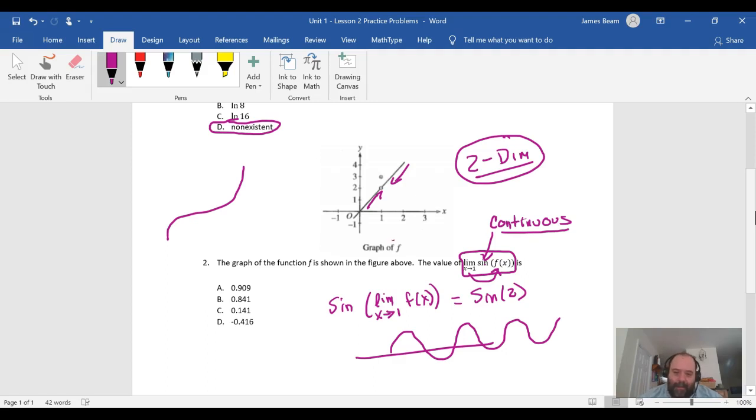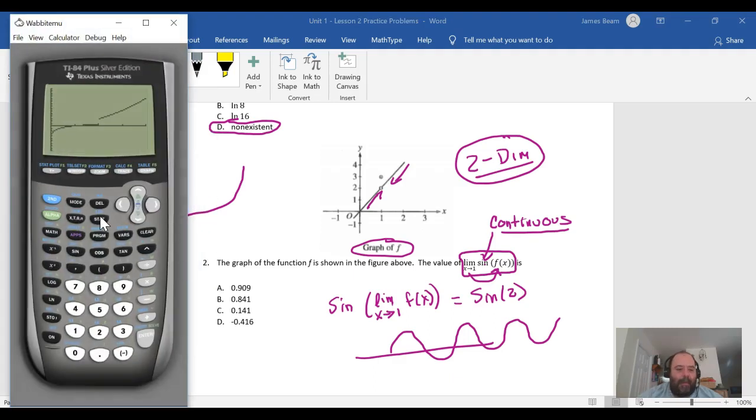So this one would have to be a calculator active problem. I would go in and I would say sine of two, and my calculator gives me 0.909. Now if your calculator gave you something else, that's a mode issue.